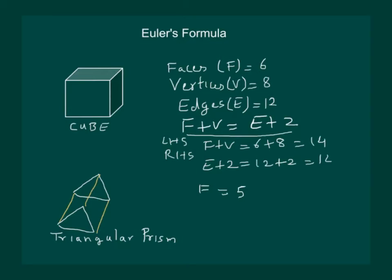Let us count the vertices. We have 1, 2, 3, 4, 5, 6. So number of vertices is 6. Let us count the edges which are 9.